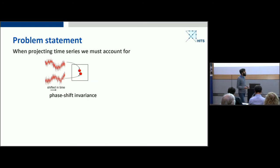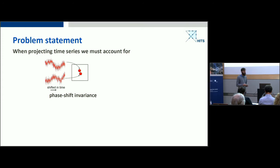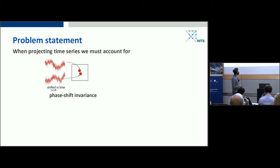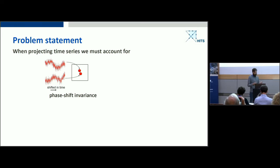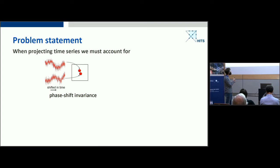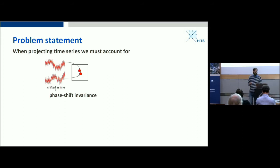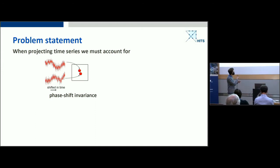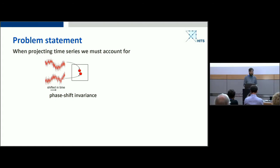Why are time series different? One reason is shift invariance. You may have two time series that are very similar to one another, except that one is shifted in time. Typically we're not interested in this shift — we still regard them as similar. The algorithm should be aware of this and project them close together, disregarding the shift in time.